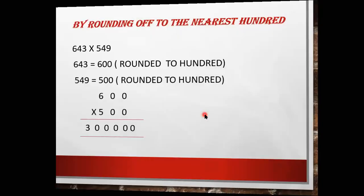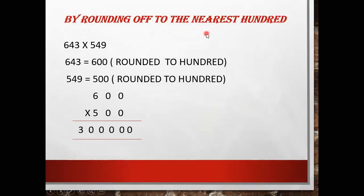Next, rounding off to the nearest 100: the sum is 643 × 549. When you round 643 to the nearest 100, you check the tens column. Here in the tens place we have 4, which is less than 5, so the number does not round up to the next 100. Therefore 643 rounds to 600.